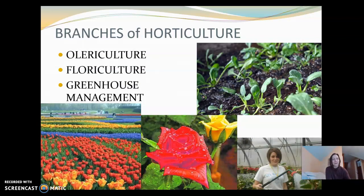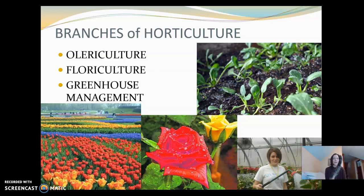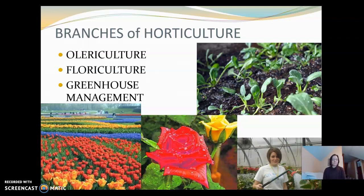Some other branches are olericulture, floriculture, and greenhouse management. Olericulture is the study of growing vegetable crops — we have spinach shown here, and we could be talking about tomatoes as well. Floriculture, of course, is growing flowers. And then greenhouse management can involve various different types of plants, whether they're native or exotic plants.